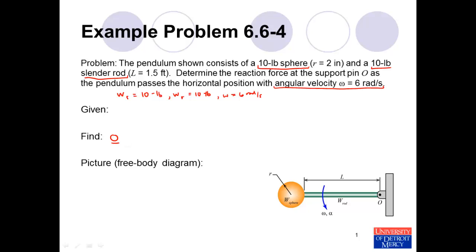Thinking ahead to how we're going to solve this problem: we have a rigid body in pure rotation, so we're using a Newtonian mechanics approach. We'll sum the forces and sum the moments. Since we have a rigid body in pure rotation, we will sum the moments about the point that the object is rotating about. To do that, we'll need to determine the mass moment of inertia of this pendulum with respect to point O.